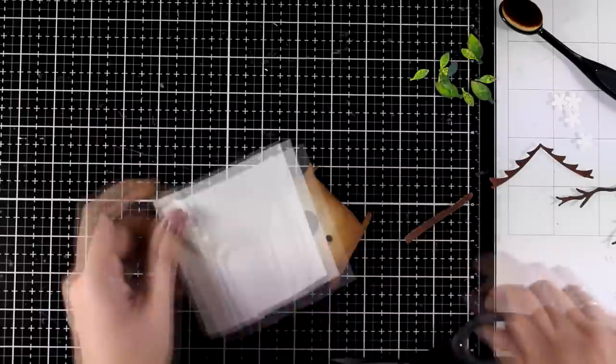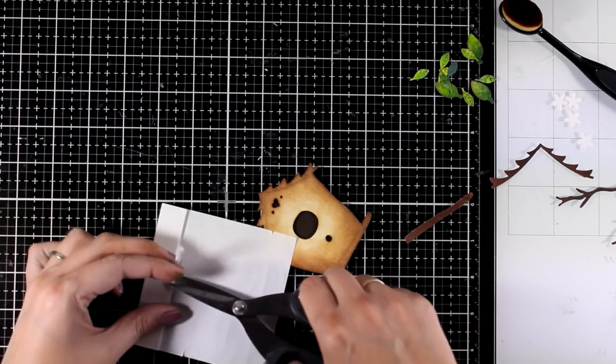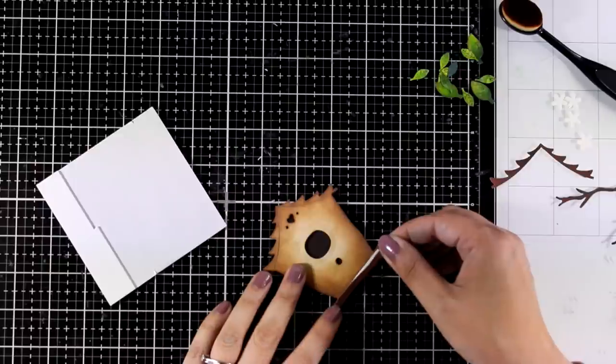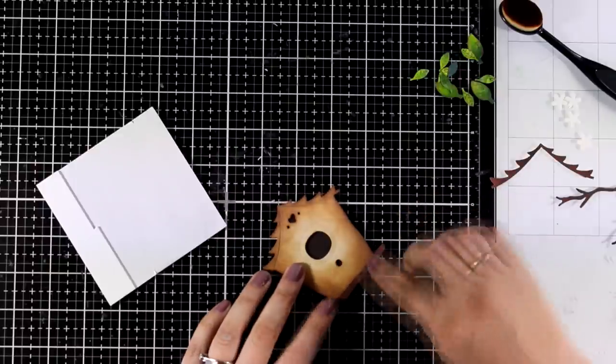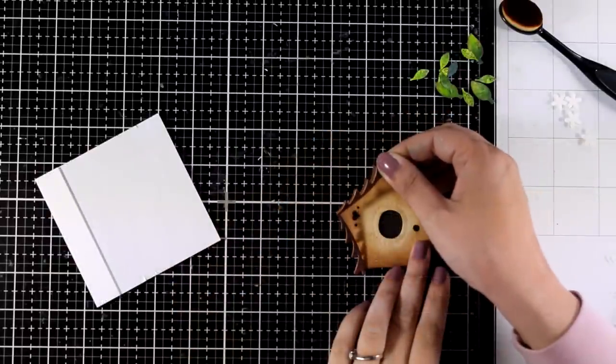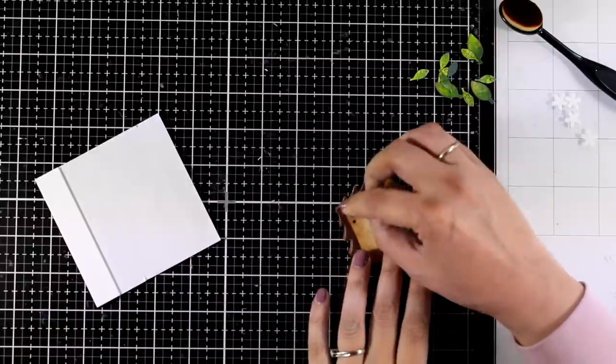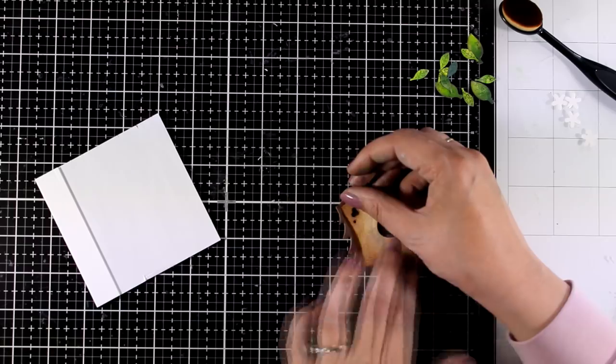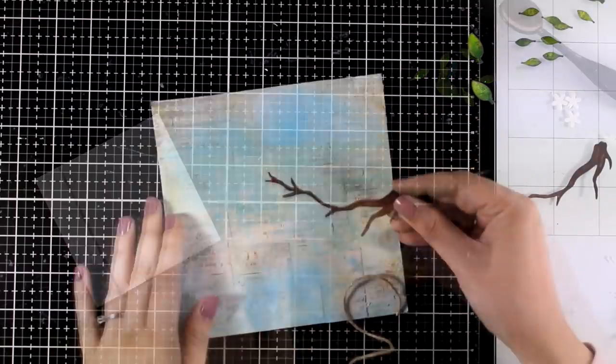Now I'm going to stick on top all the extra bits and pieces such as that branch at the bottom and the roof. For that I am using foam tape so that I can have some extra dimension. Remember this is a shadow box, so I can go as dimensional as I want to, but if you are recreating this for the pages of your art journal, just don't use foam tape.